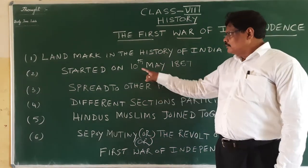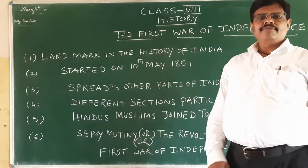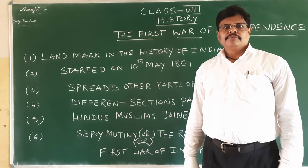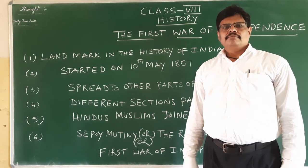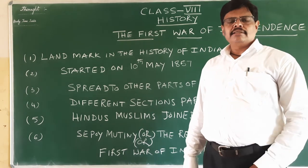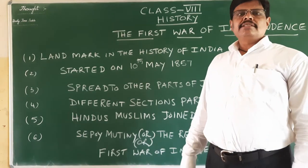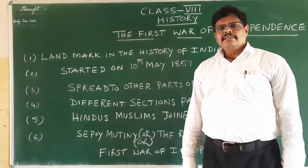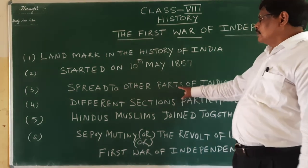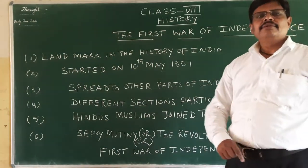It actually started on the 10th of May, 1857, at Meerut Cantonment, where the sepoys — the Indian soldiers of the East India Company — revolted against British officials and raised their revolt.